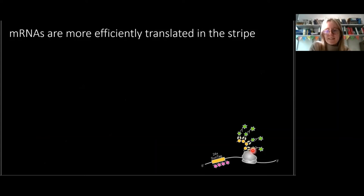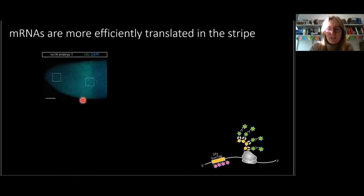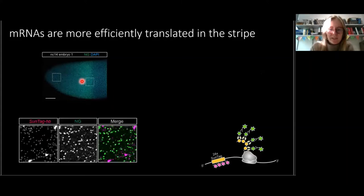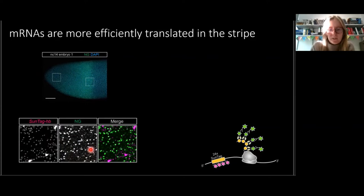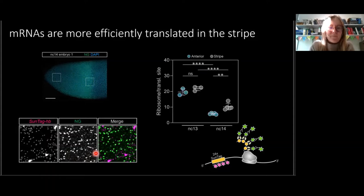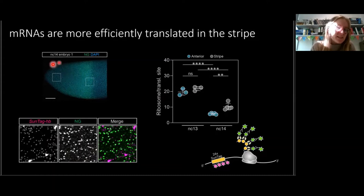This shows that the SunTag method is really good for studying temporal as well as spatial regulation of translation. We also wanted to see whether the efficiency of translation on mRNAs differed between Nucleocycles or areas of the expression domain. We can do this by looking at fluorescence intensity, since more ribosomes translating a transcript produces more fluorescence signal. Taking higher magnification images of the anterior and stripe regions, we could clearly distinguish bright translation sites co-localised with an mRNA from dimmer single proteins. Using single protein fluorescence as a calibration, in Nucleocycle 13 we see around 20 ribosomes per mRNA at translation sites, with no significant difference between the anterior and the stripe region.